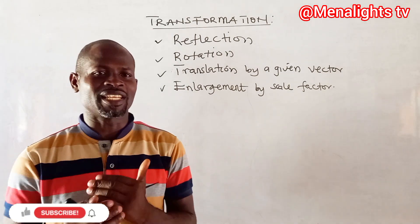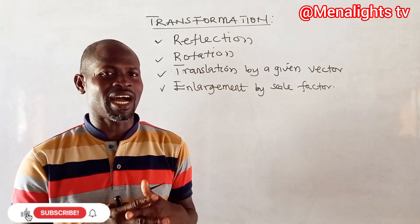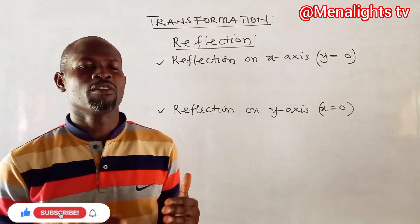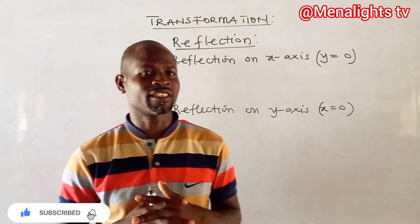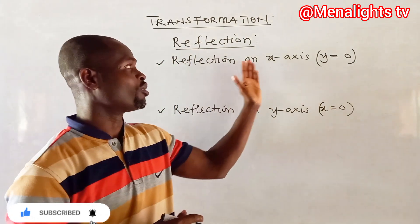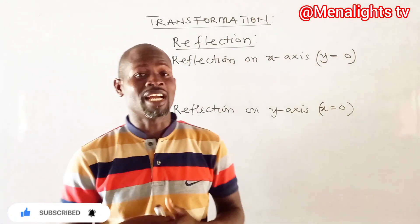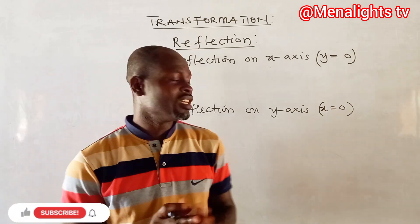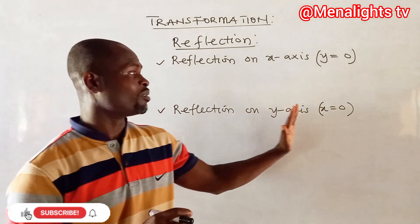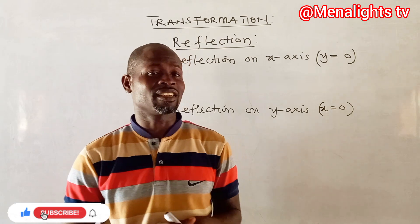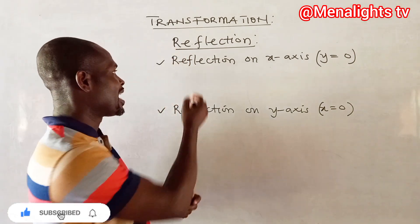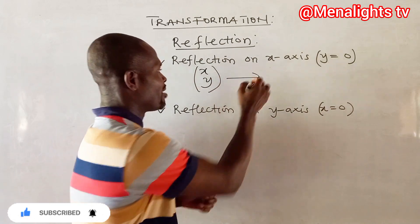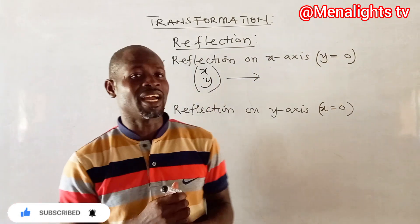We will take these one by one, then draw the graph to see how it is done. When we come to reflection, there are two types: reflection on the x-axis, where y is zero, and reflection on the y-axis, where x is zero. When you have point (x, y) and you are reflecting it on the x-axis...